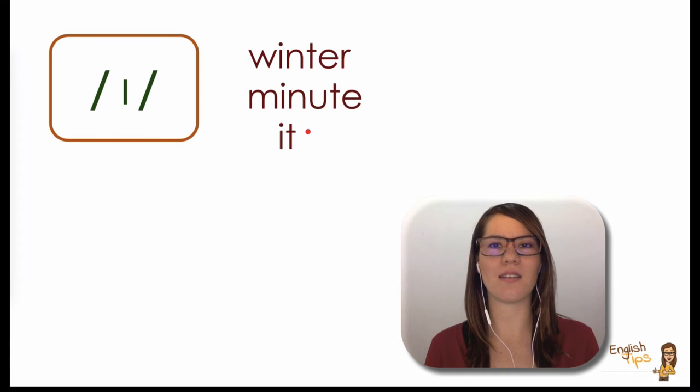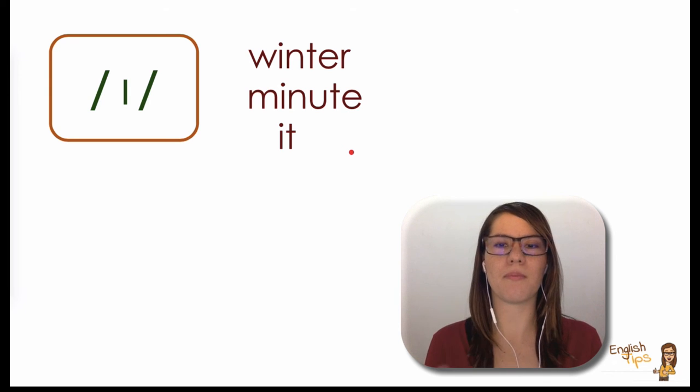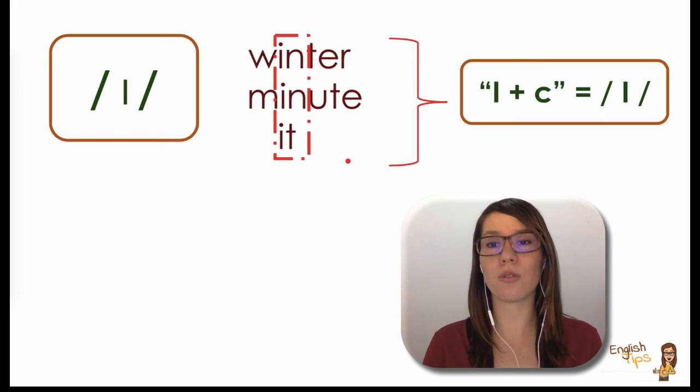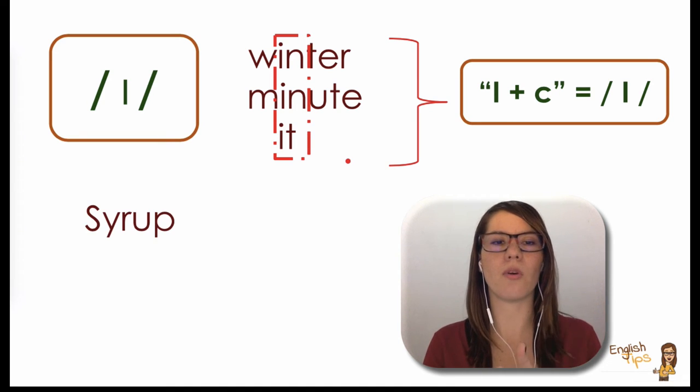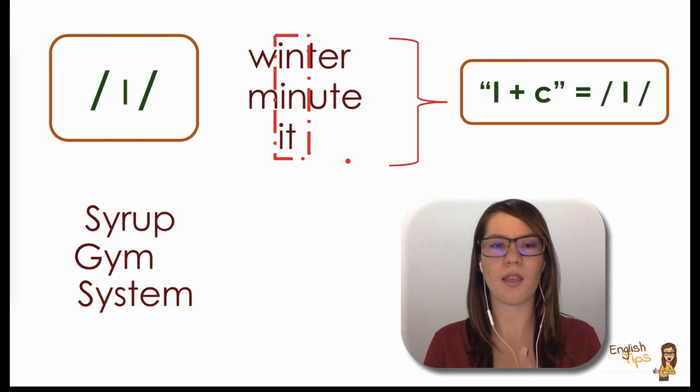Also, as you can see here, we have some letter combinations that will help you recognize when you need to pronounce it as /i:/ or /ɪ/. In these words we have the combination of the letter I plus a consonant. So usually when you have I plus one or two consonants, they'll be pronounced as /ɪ/. But there are other letters.